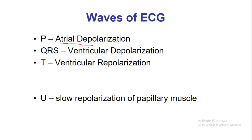The P wave represents atrial depolarization. The QRS wave collectively represents ventricular depolarization. The T wave represents ventricular repolarization, and the U wave represents slow repolarization of the papillary muscle. One important thing to note: atrial repolarization occurs during the QRS complex along with ventricular depolarization, but the major event during QRS is ventricular depolarization, which is why QRS complex only represents ventricular depolarization.